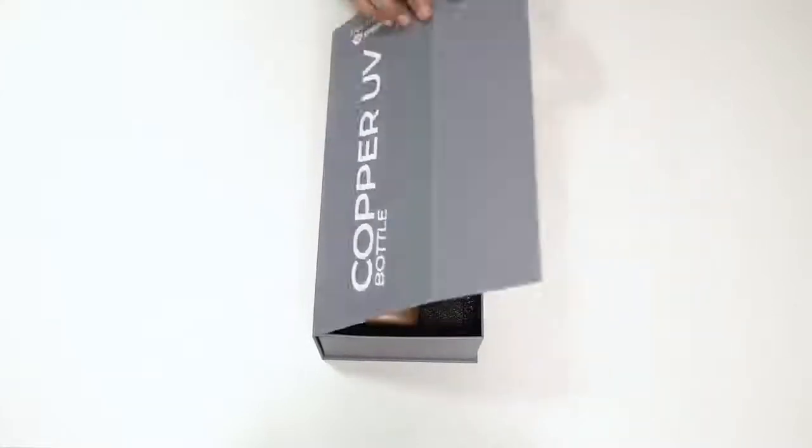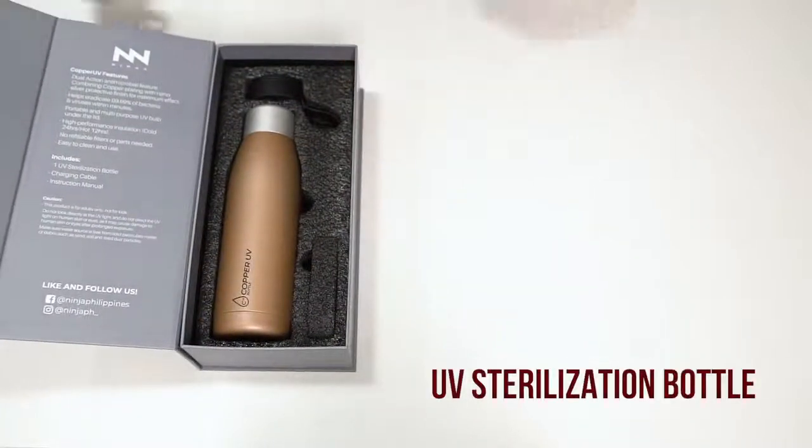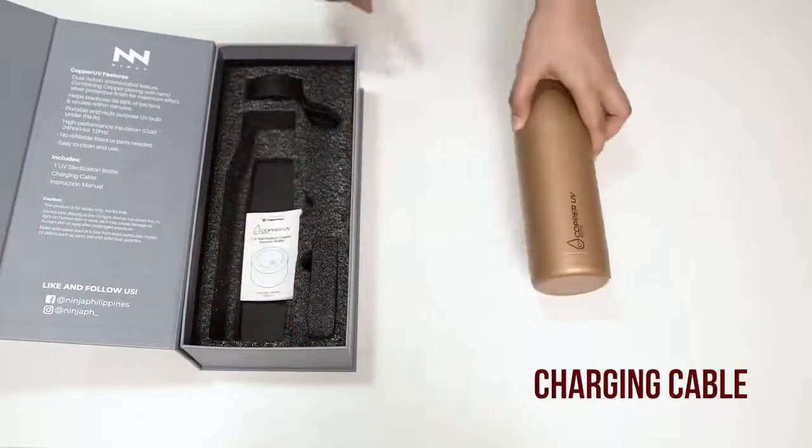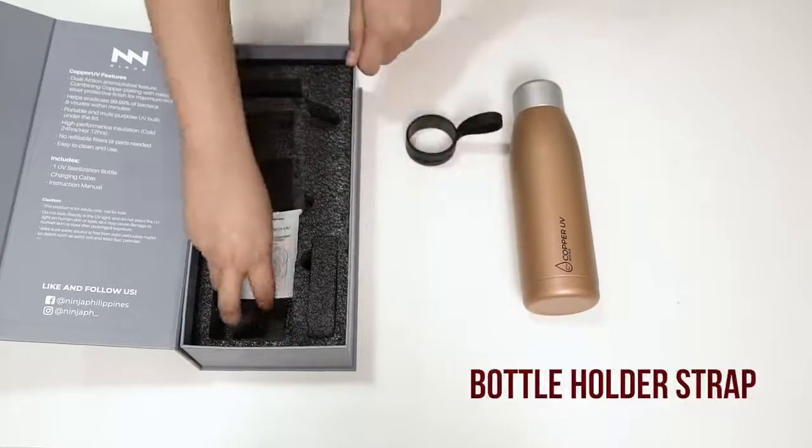Each box of Copper UV Bottle includes one piece of UV sterilization bottle, one piece charging cable, one instruction manual, and one bottle holder strap.